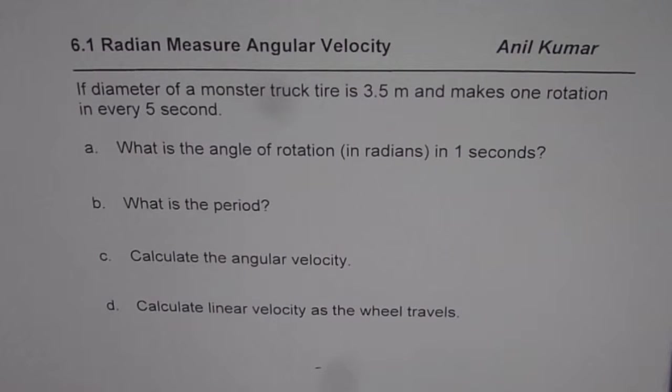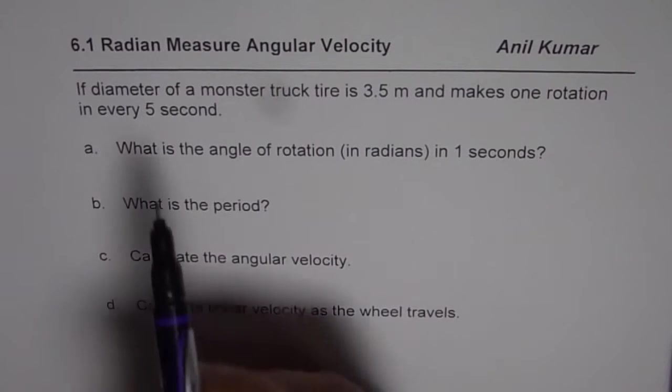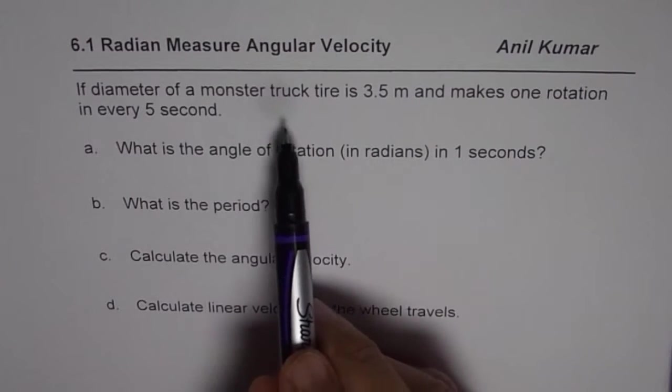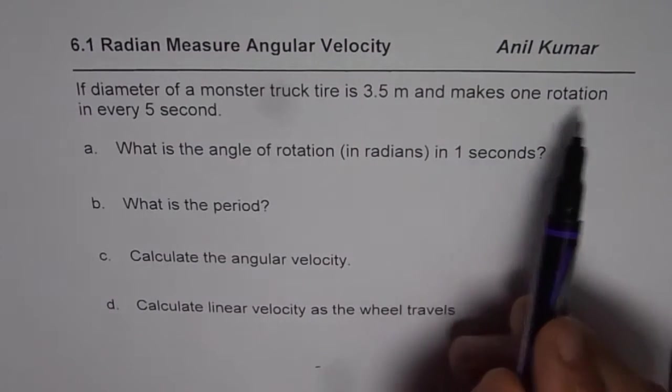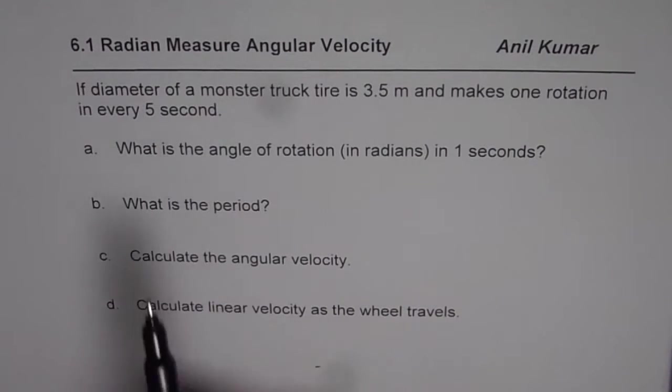I'm Anil Kumar and in this video we will do some calculations to understand radian measurements and angular velocity. The question here is, if diameter of a monster truck tire is 3.5 meters and it makes one rotation in every five seconds,